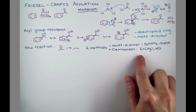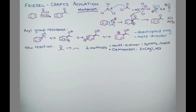The second way to do this is the Clemensin reduction, which uses zinc-mercury amalgam in the presence of acid. Okay, now let's get back to the problems with the Friedel-Crafts alkylation reaction and see why acylation can be used to solve them.